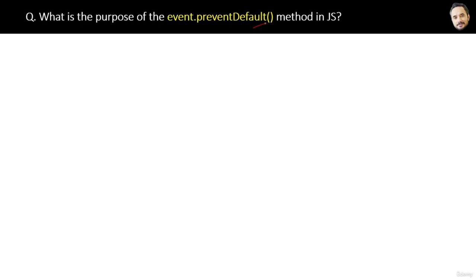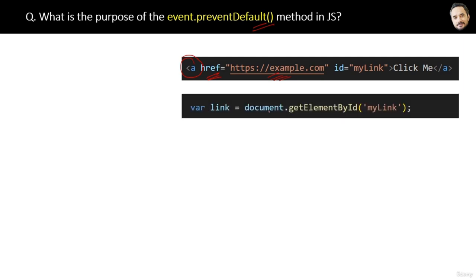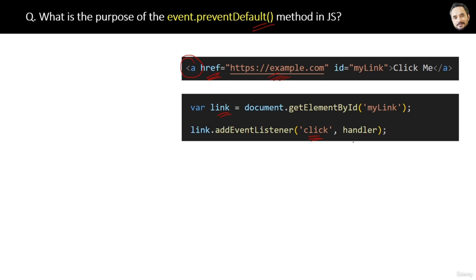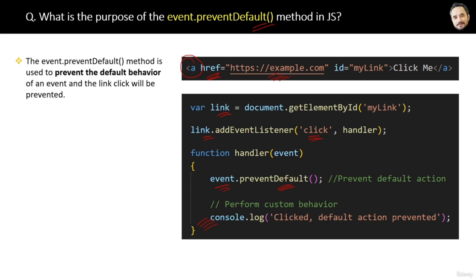What is the purpose of the event.preventDefault() method in JavaScript? For example, we have a link on our page and we want to disable its default click behavior. We get the reference of the link, attach a click event, and call the preventDefault() method of the event object, which suppresses the default behavior of the link. The answer is: event.preventDefault() is used to prevent the default behavior of an event, such as preventing a link click from navigating.